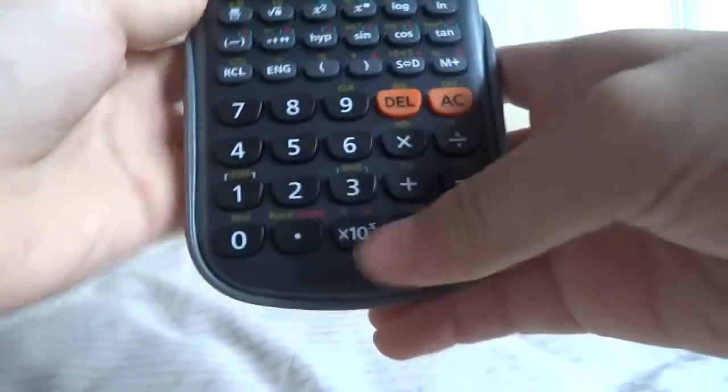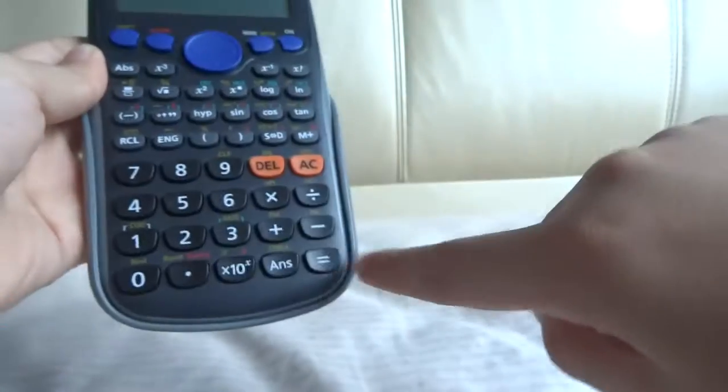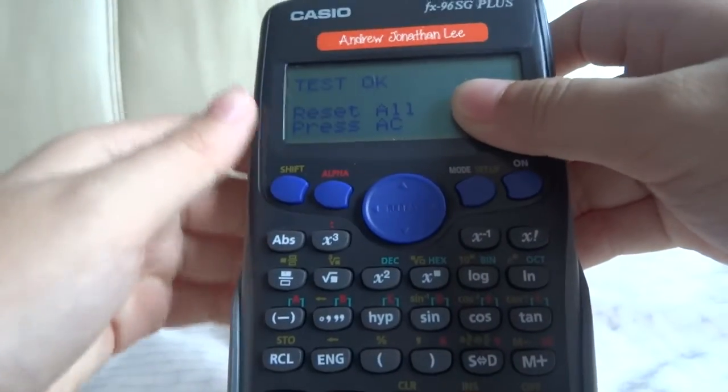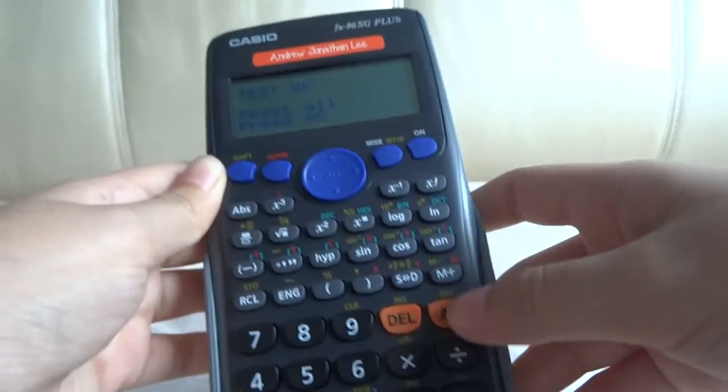45, 46, 47, 48. When you press equals, it's 49. They'll say test OK. Reset or press AC. So just press AC.